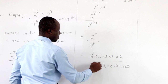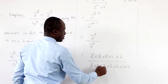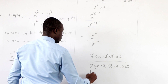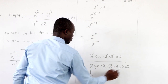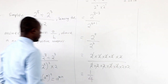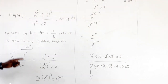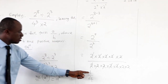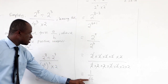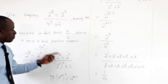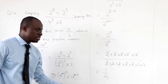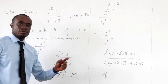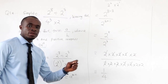Counting: 5 twos on top and 7 twos on the bottom. We cancel matching factors — each 2 on top cancels a 2 on the bottom — leaving 1 over 2 × 2, which is 1 over 4. The question asks us to leave the answer in the form a over b, where a and b are positive integers. Here a = 1 and b = 4, both positive integers.